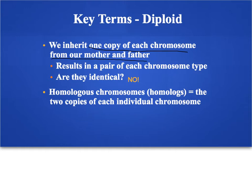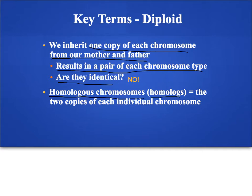So one of your chromosome 1s came from your mother and one came from your father; one of your chromosome 2s came from your mother and one from your father. When the sperm fertilizes the egg, the sperm has one copy of each chromosome and the egg has one copy, and that results in a cell that has a pair of each chromosome type. The two copies of each chromosome are not identical, because they came from different parents and different people have different versions of different genes. The word we use to refer to a pair of chromosomes is homologous chromosomes, or homologues.